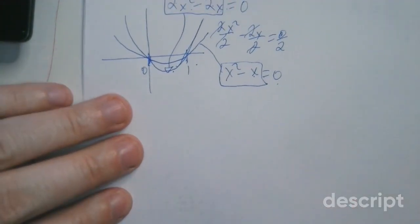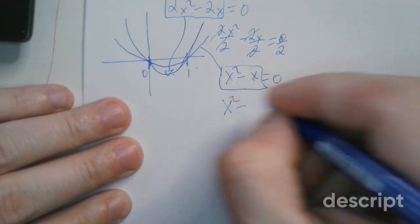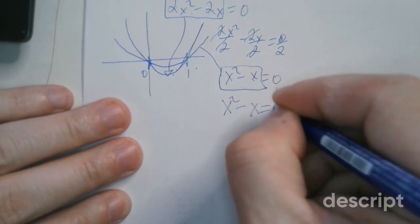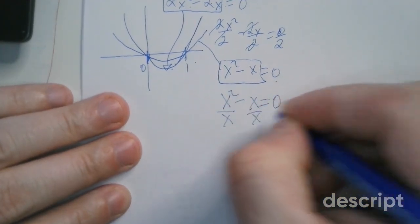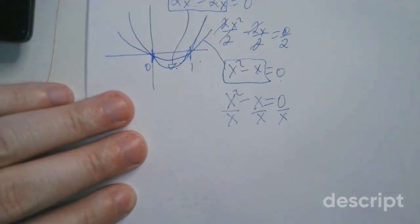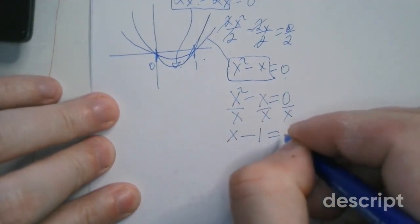Something different happens when you divide by a variable though, and that's the danger. So if you do x squared minus x equals zero, so after you divide by the two, for example, and you then divide by x, you get a different result. Check it out. So this becomes just x minus one equals zero.